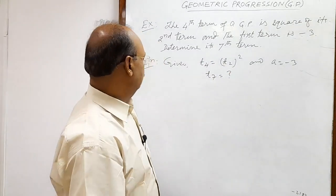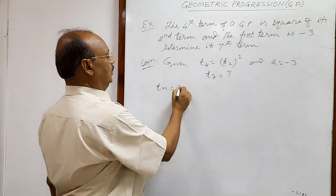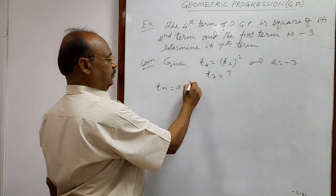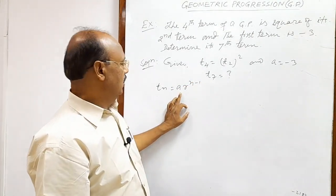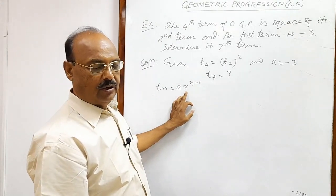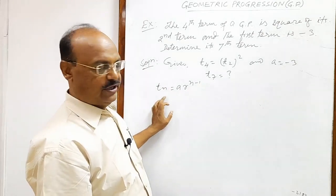So we know the formula. The general term of geometric progression Tn is equal to A into R to the power n minus 1. Here A is first term, R is common ratio, and n is the number of terms.